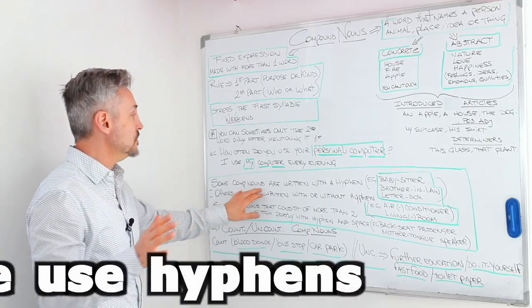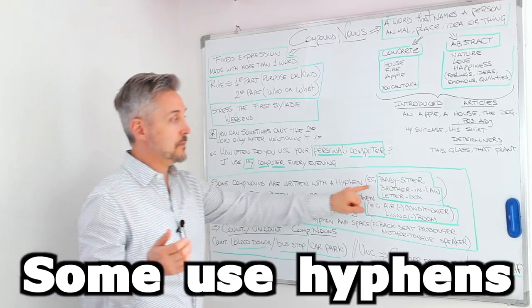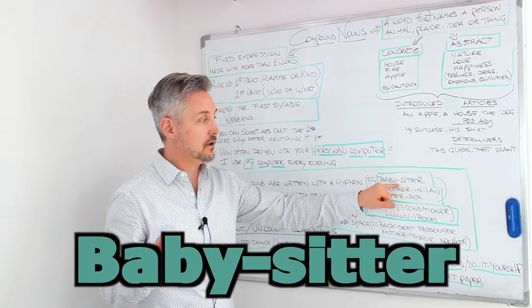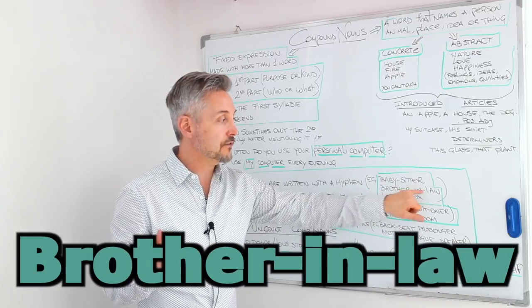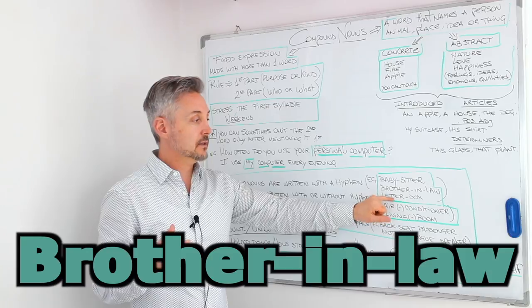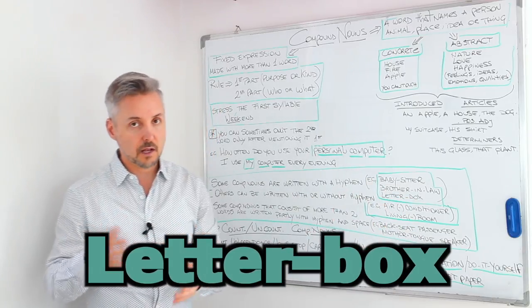Now, some compound nouns are written with hyphens. For example, babysitter. And here we have a hyphen. Or brother-in-law. Here we have two hyphens. And letterbox. These are examples and there are a lot of them.